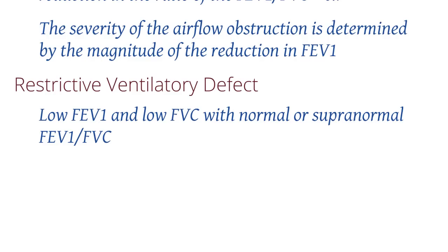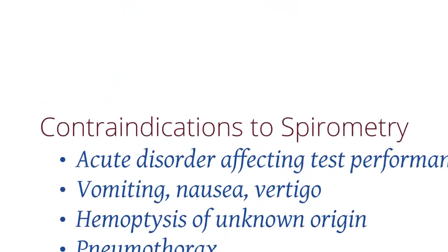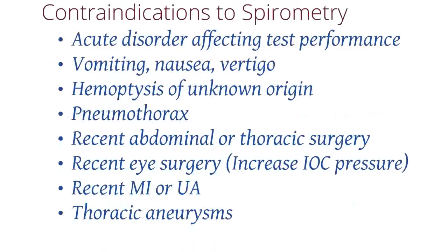Next, we need to look at the contraindications to doing spirometry. Spirometry should not be done if there's any acute disorder that you think will affect test performance. But it should especially not be done in patients who are vomiting, have nausea, have vertigo, hemoptysis of unknown cause, who have a pneumothorax, recent abdominal or thoracic surgery, recent eye surgery, recent history of MI, or if they have thoracic aneurysms.